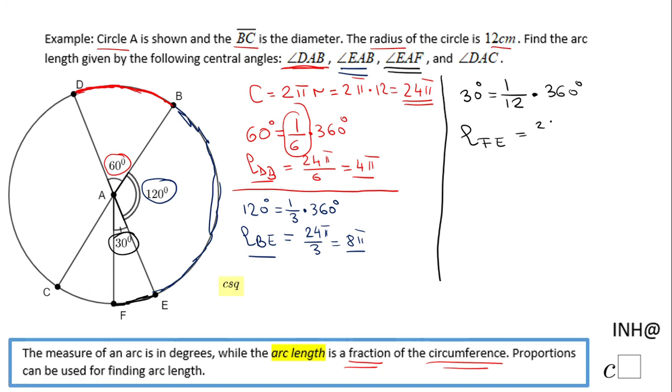24π divided by 12, and that will be 2π. And the last one we have is angle DAC, which is this angle right here.